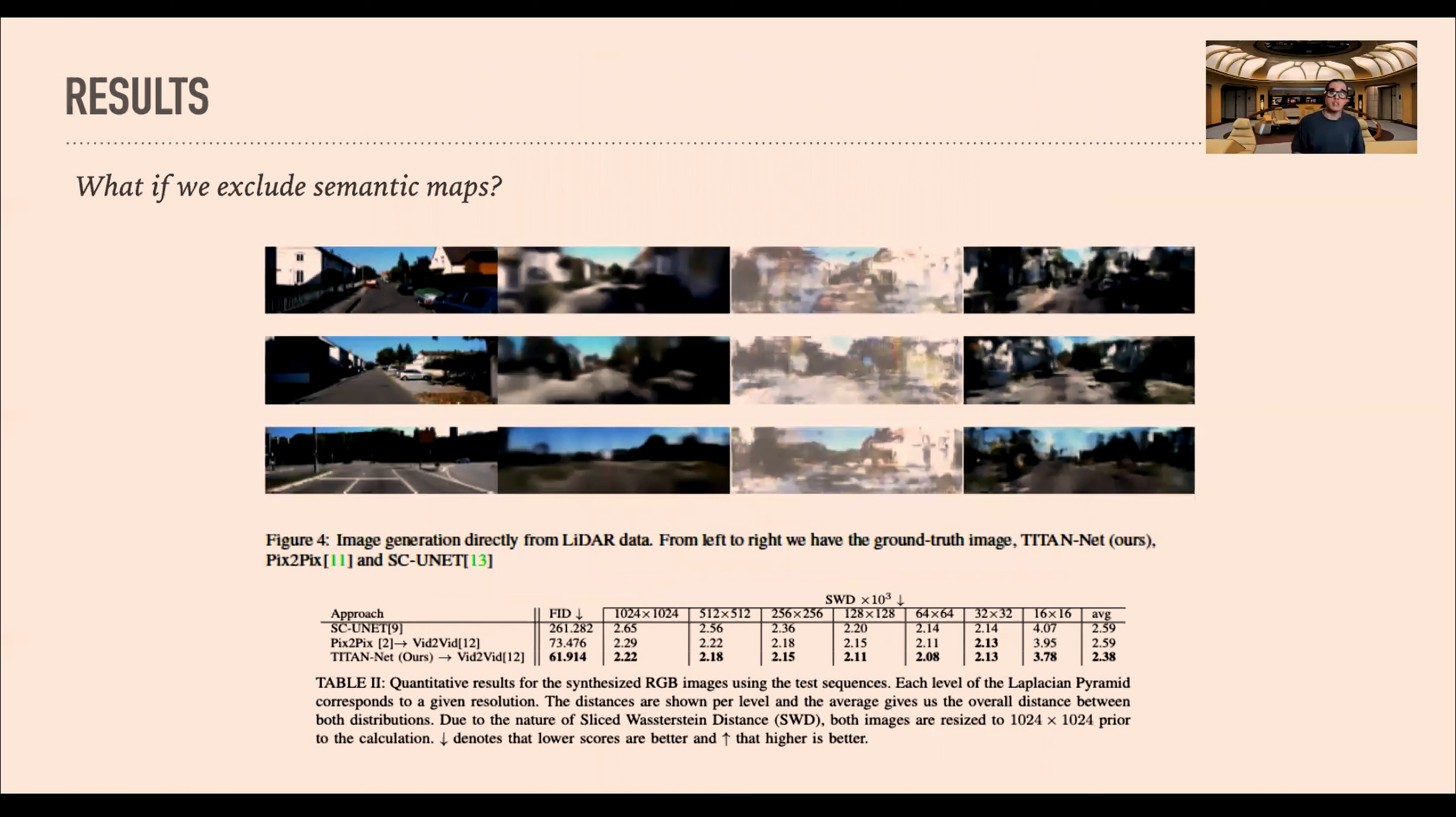We did some ablation studies to prove that semantic segmentation maps are important and make the training faster and easier. We retrained everything without the conditional segmentation maps and tried to recover directly the RGB. We have another network, SCUNet, that had some good results but different input. You can see that the results are not good. This is a good indication that semantic segmentation maps is a good middle step to accelerate and have better results when you try to recover modality of a missing sensor.